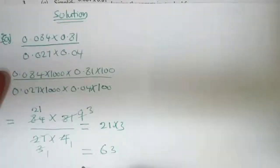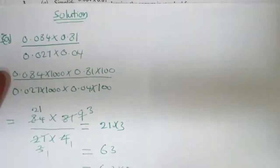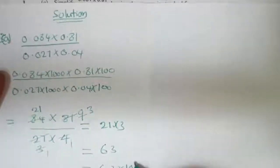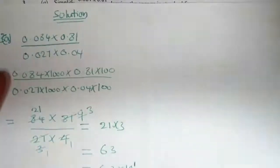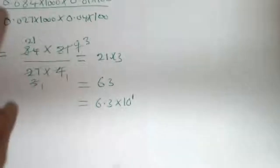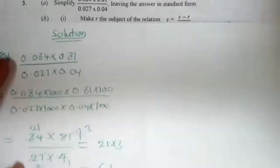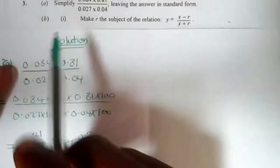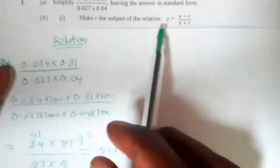This gives us 21 times 3, which equals 63. We write this in standard form as 6.3 times 10 to the power of 1. That is our answer in standard form.